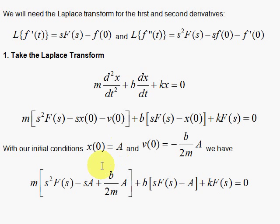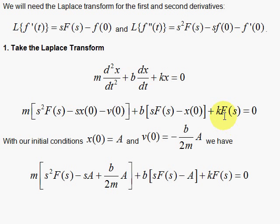Replace the initial conditions: whenever you see x(0), put in capital A — that's two places — and whenever you see v evaluated at t equals 0, put in this negative thing, but that negative will cancel and you'll have b over 2m times capital A. The Laplace transform of kx is simply k times the Laplace transform of x, and the Laplace transform of 0 is simply 0.